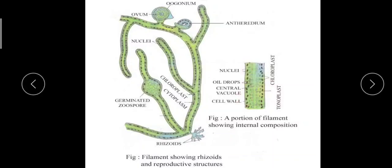In the center of the filament there is a large vacuole, seen as a light-shaded region running like a tube through the center. The cytoplasm is found towards the periphery. This central vacuole extends all along the length of the filament. The cytoplasm performs non-directional streaming movements known as cyclosis.